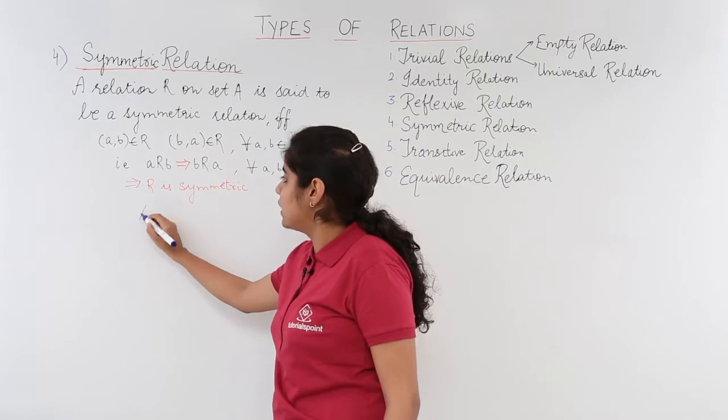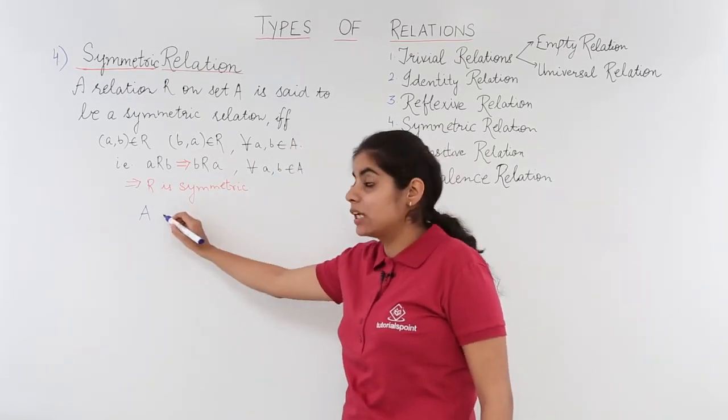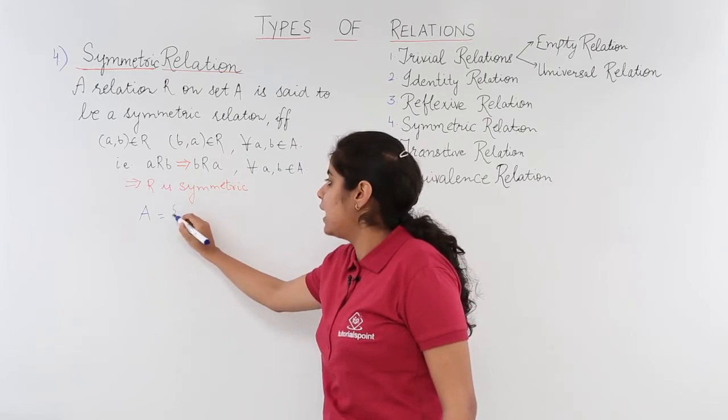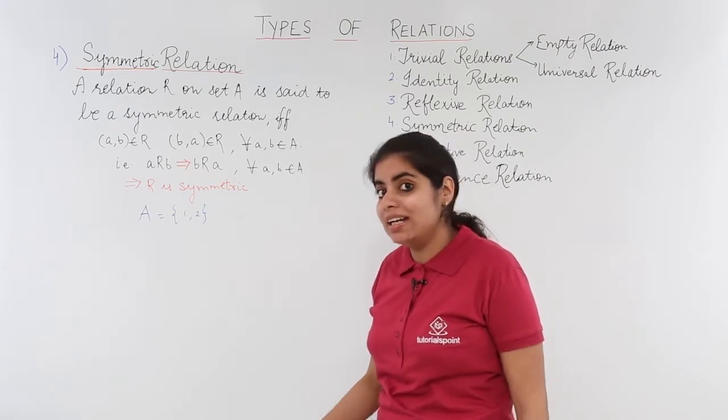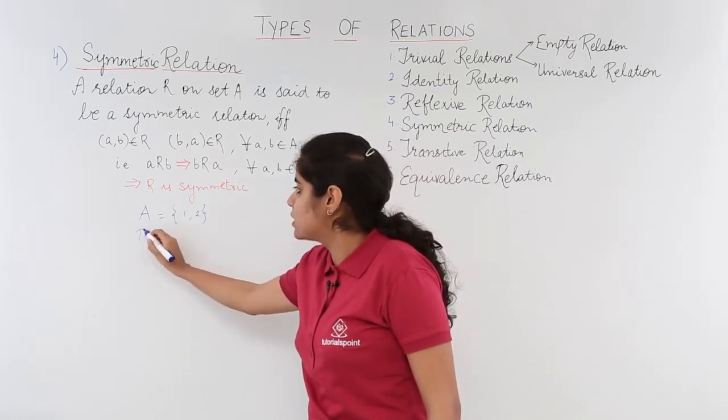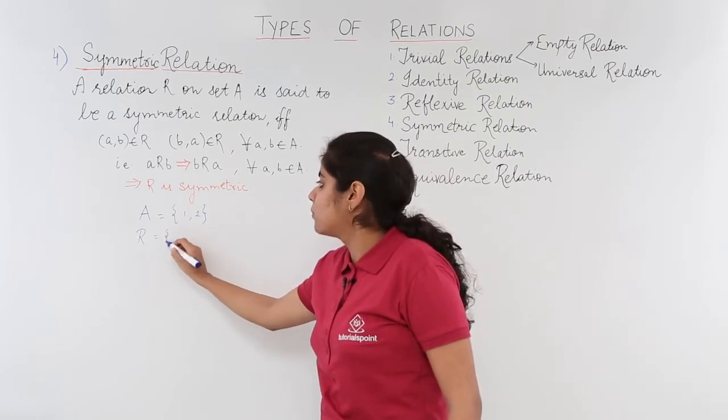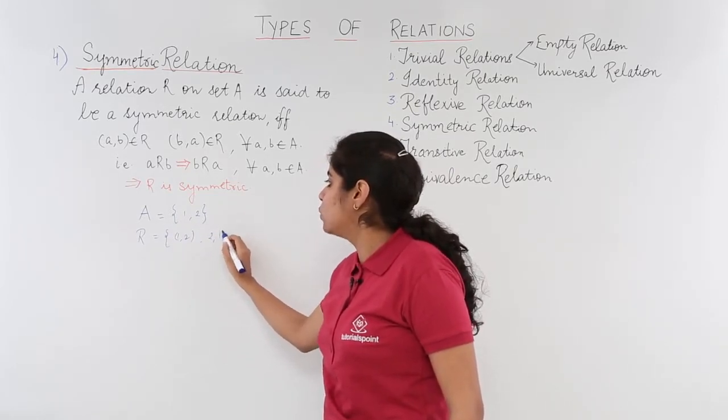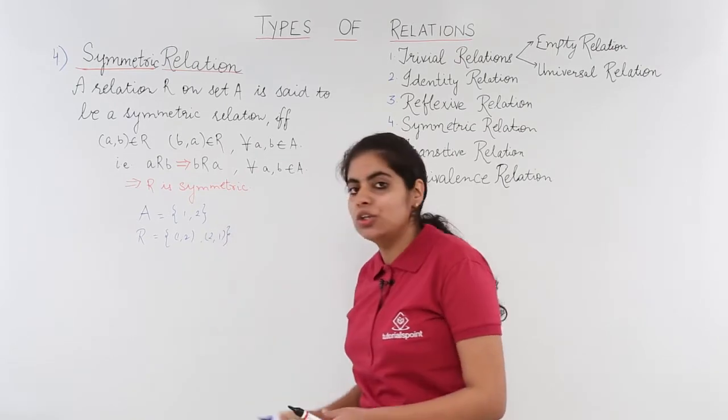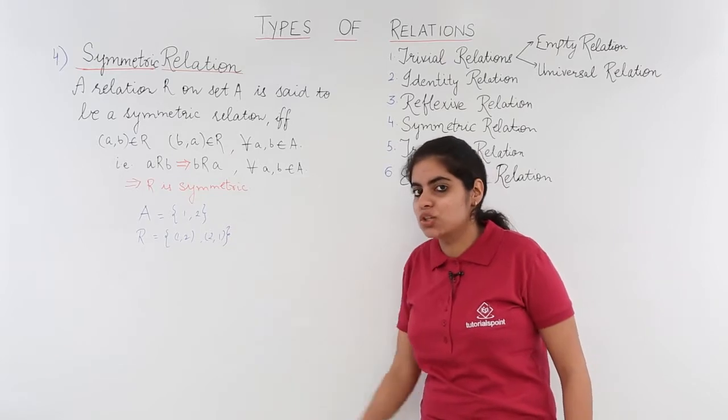Suppose I have a relation for a set A. Now A is a set given to me such that A has elements 1, 2 and the relation on the set is defined by R such that R is (1, 2) and it has (2, 1) as well. You see there are two ordered pairs in this set: (1, 2) and (2, 1).